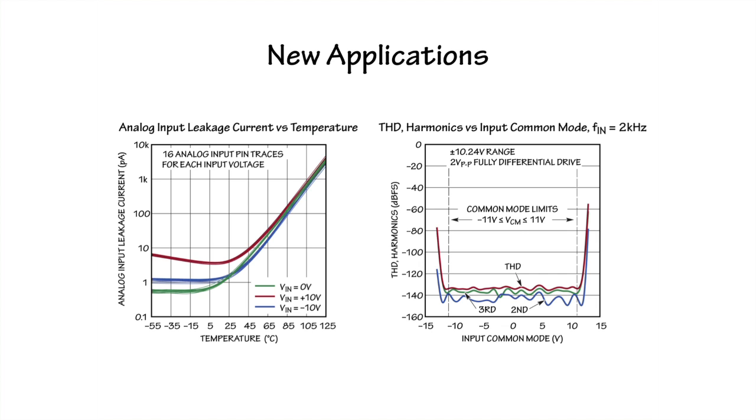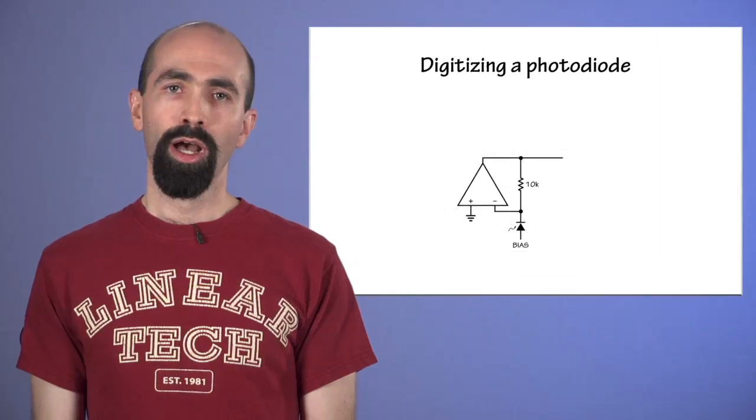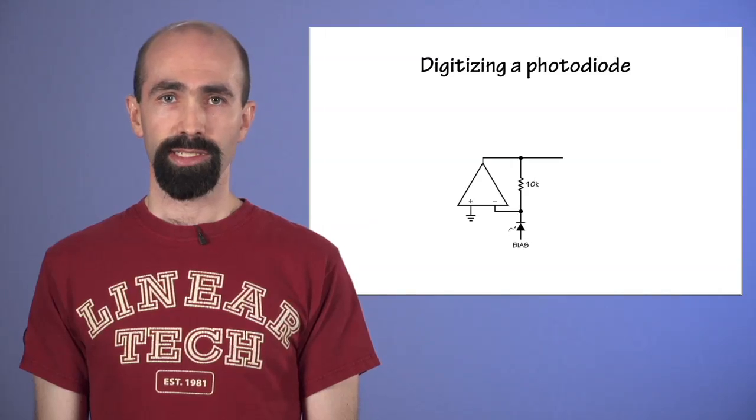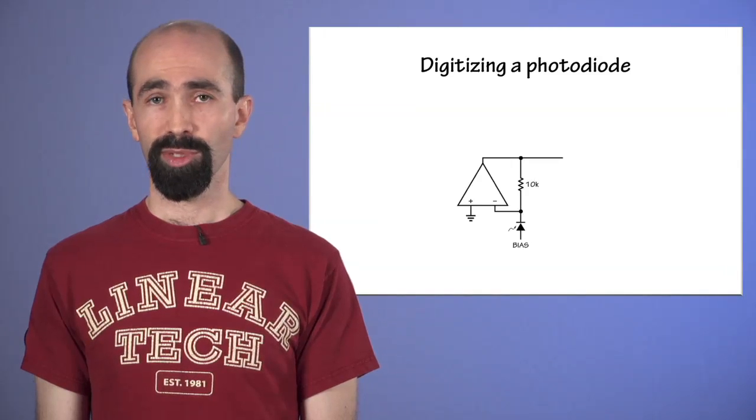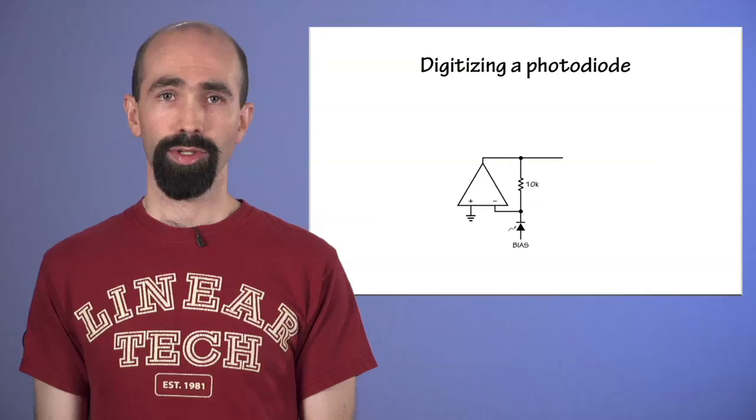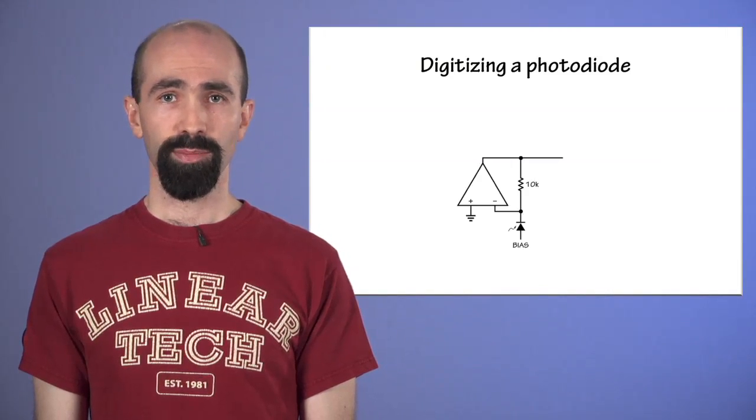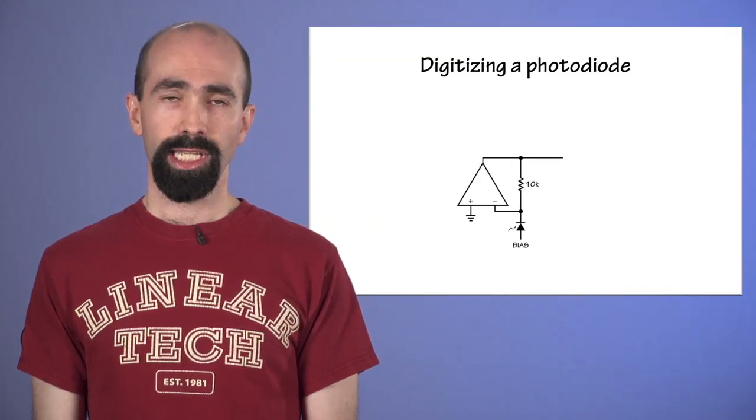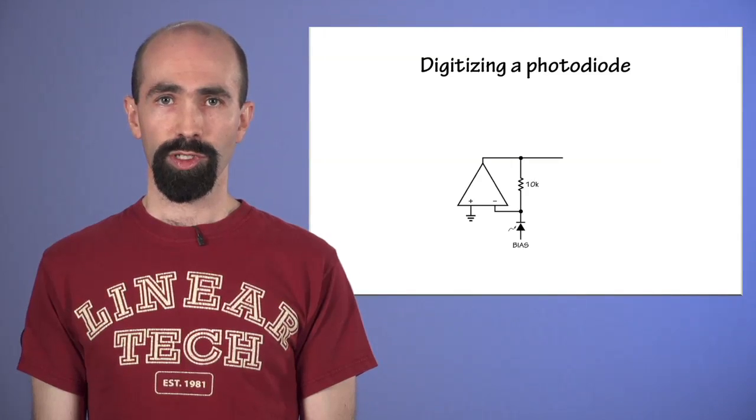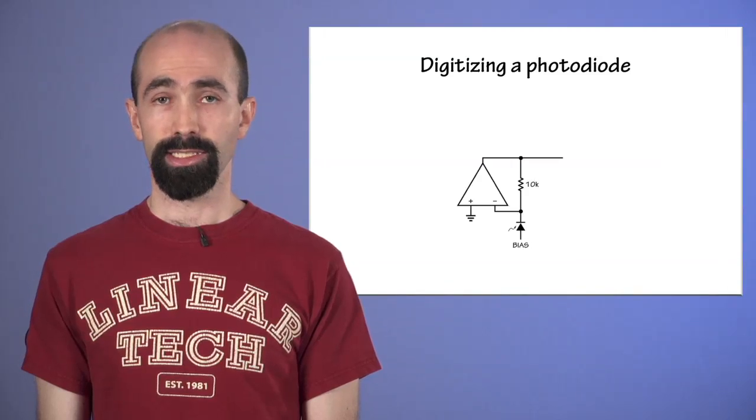The analog input current is solely determined by junction leakage, and is typically less than 10 picoamps at room temperature. This low input current means that the LTC-2358 can be used with extremely low-level current signals, as are typical of photodiodes. A photodiode is a reverse bias diode designed to conduct a small amount of current determined by the light level shining on the diode. This small current signal is then often converted to a voltage by a transimpedance op-amp circuit like this one, so that the output voltage of the op-amp is proportional to the diode current and may be digitized by an ADC.